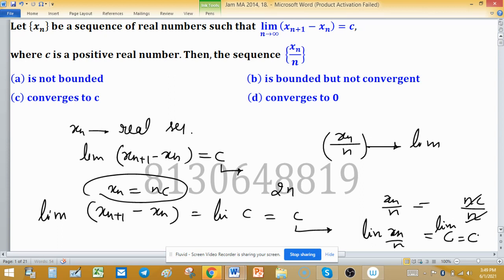The limit exists. It is obviously bounded and convergent. Option A says is not bounded, which is discarded because it's convergent so it must be bounded. Option B says bounded but not convergent, but it is both convergent and bounded, so option B is also discarded.